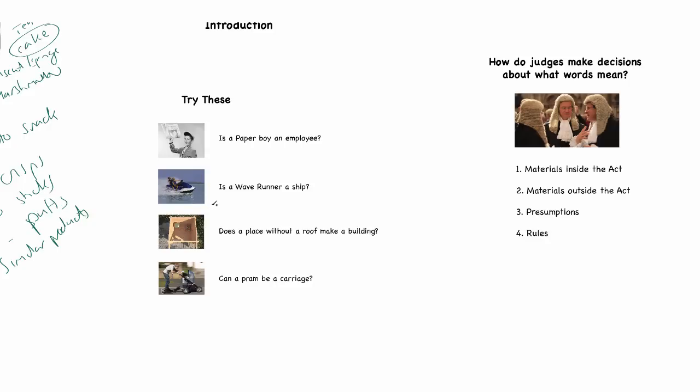Finally, let's have a look at these just to labor the point. The first to think about is, can a paperboy sue for unfair dismissal after the time of his paper round was changed and he refused to carry out his round at the new time? Because he refused, he was sacked. The question is, is a paperboy an employee? The second is, can a wave runner be a ship for the purposes of the Merchant Shipping Act 1995? So if it crashes into another causing serious injury, can the driver be prosecuted?